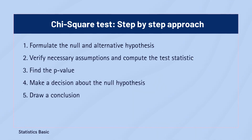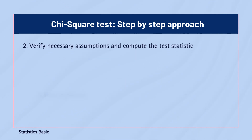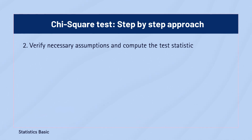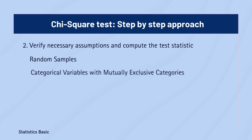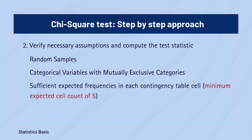In the second step, we'll verify that the data meets certain statistical assumptions, and once assumptions are confirmed, we'll compute the test statistic. For the chi-square test to be valid, we assume a random sample, categorical variables with mutually exclusive categories, and sufficient expected frequencies in each contingency table cell.